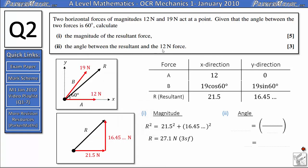Next I need to find the angle between the resultant and the 12 Newton force. This is where drawing the diagram carefully helps me out. Because I've got the 12 Newton force along here and my resultant going here, all I need to do is find the angle in here. As I've now got a right angle triangle, I can use SOHCAHTOA here, I've got the opposite and the adjacent side so I'm going to do tan of theta equals 16.45 over 21.5.